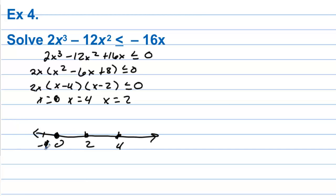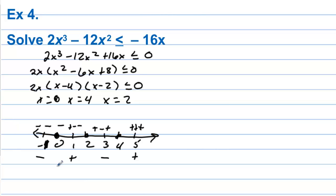We do have an equal-to part on this inequality, so we can include these values that make it 0. Let's test negative 1, 1, 3, and 5. Plugging in negative 1: negative times negative times negative — three negatives, that's a negative. Plugging in 1: positive times negative times negative — that's a positive. With 3: positive times negative times positive — that's a negative. With 5, everybody is going to be positive. We want the negatives, so we want negative infinity to 0 (include 0), union with 2 to 4 (include both).